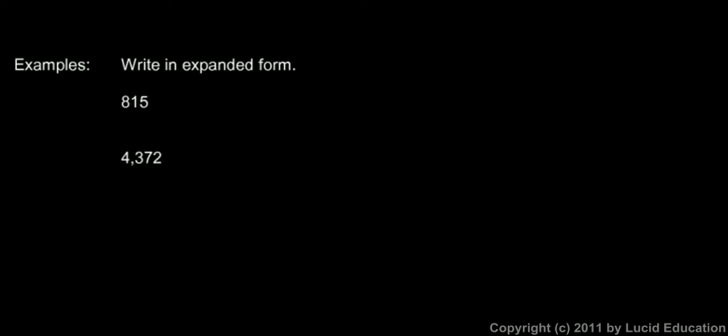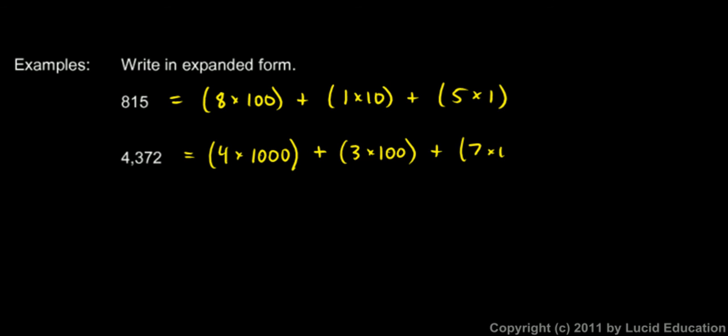Okay, in these examples we're told to write these numbers in expanded form. 815 is 8 times 100 plus 1 times 10 plus 5 times 1. 4,372 is 4 times 1,000 plus 3 times 100 plus 7 times 10 plus 2 times 1.